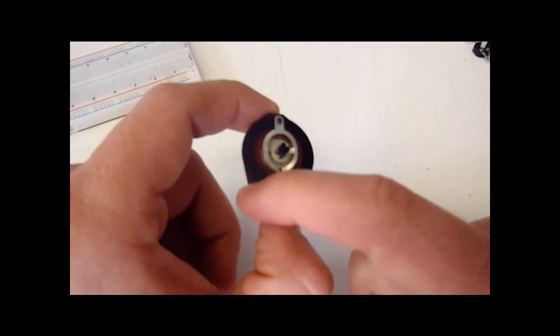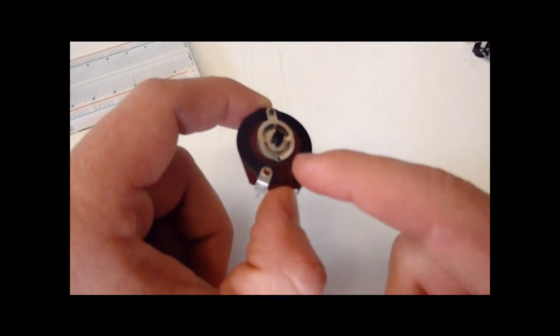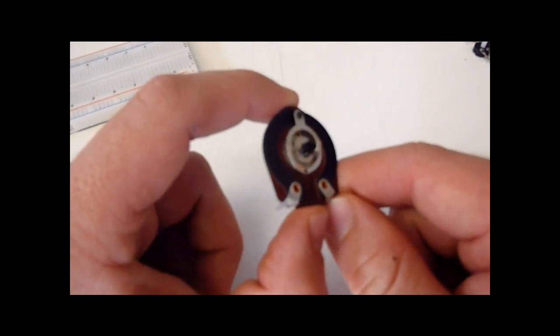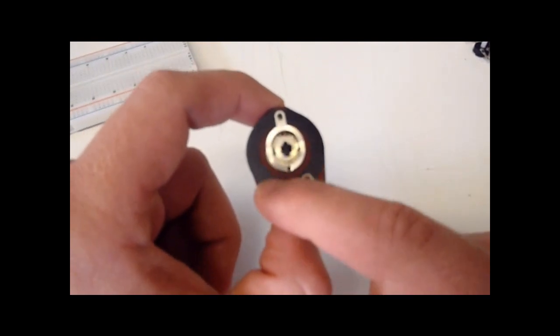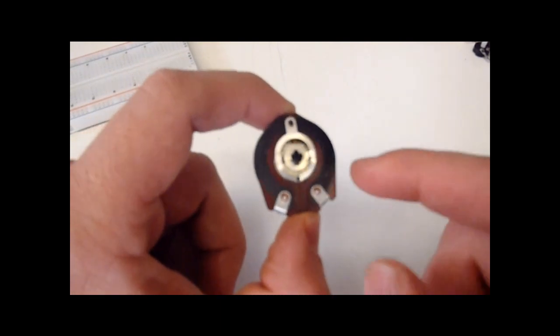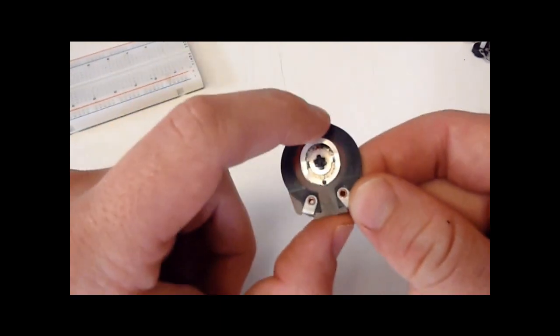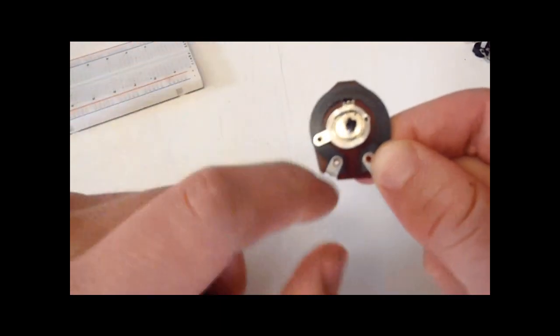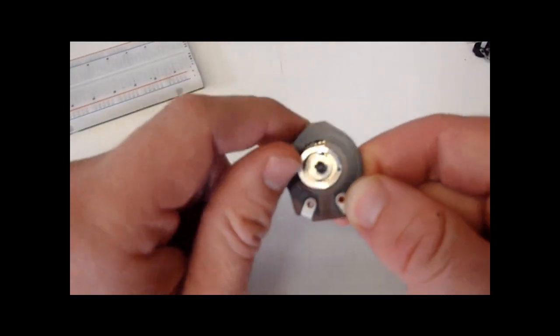And now you can see that there's a terminal A and C. A and C never have any difference between them. What I mean is that if you measure this point from this point it will always be the same. The only terminal that changes is B. Now B is variable so you can move it so the distance is shorter or longer from either point.